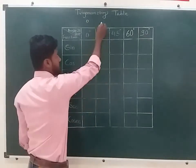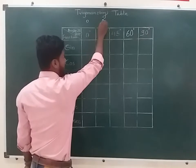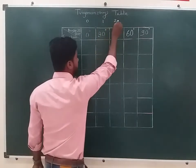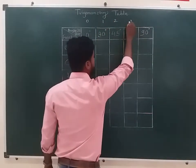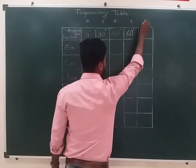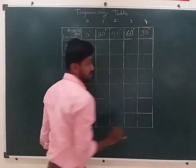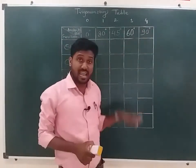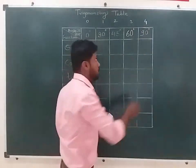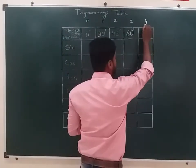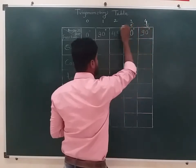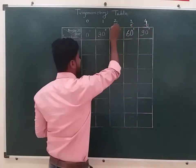Okay, 0 is number 1, 1 is number 2, then 3, then 4. We have 4 divided by 4.